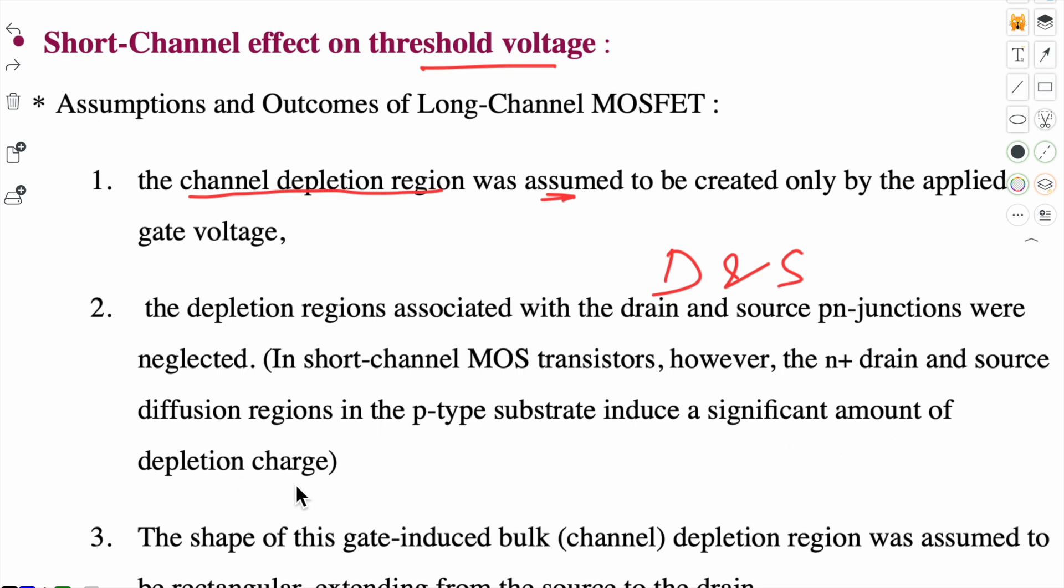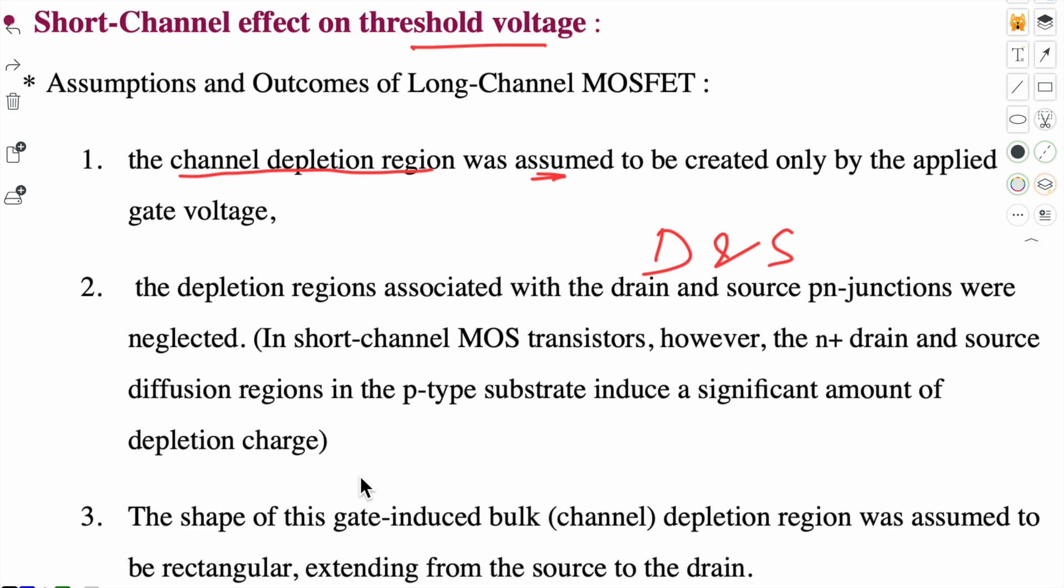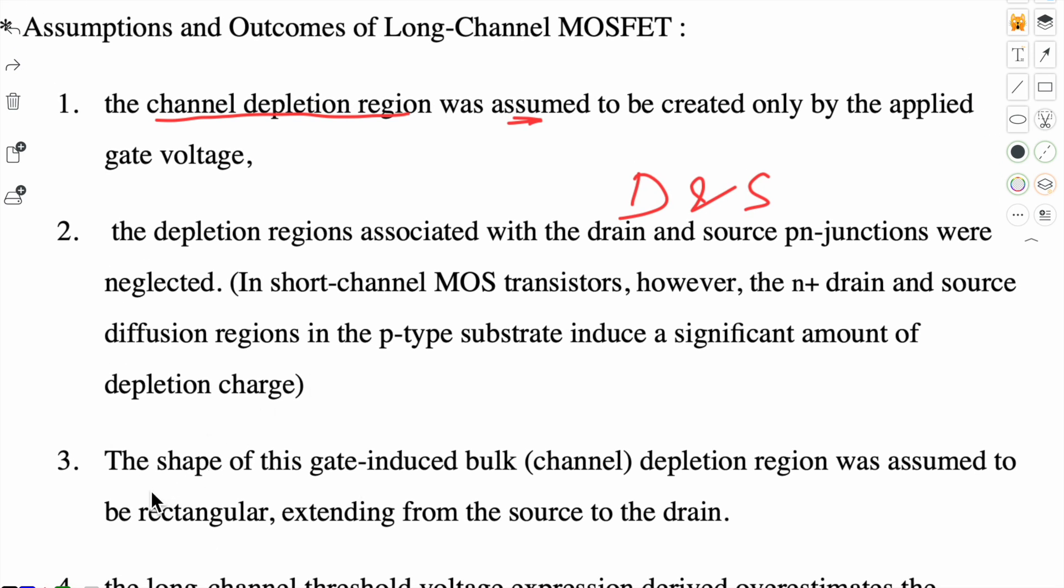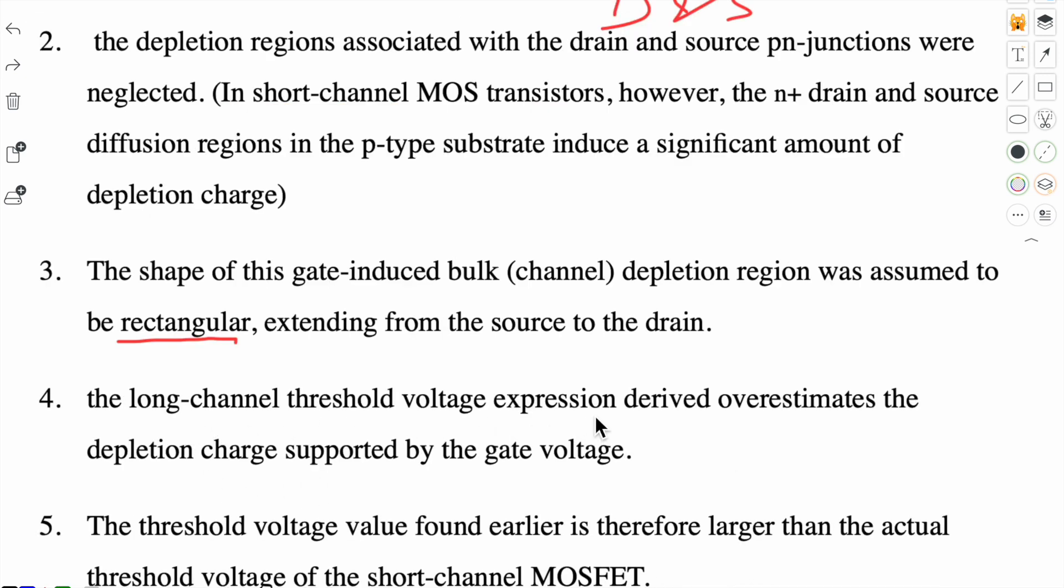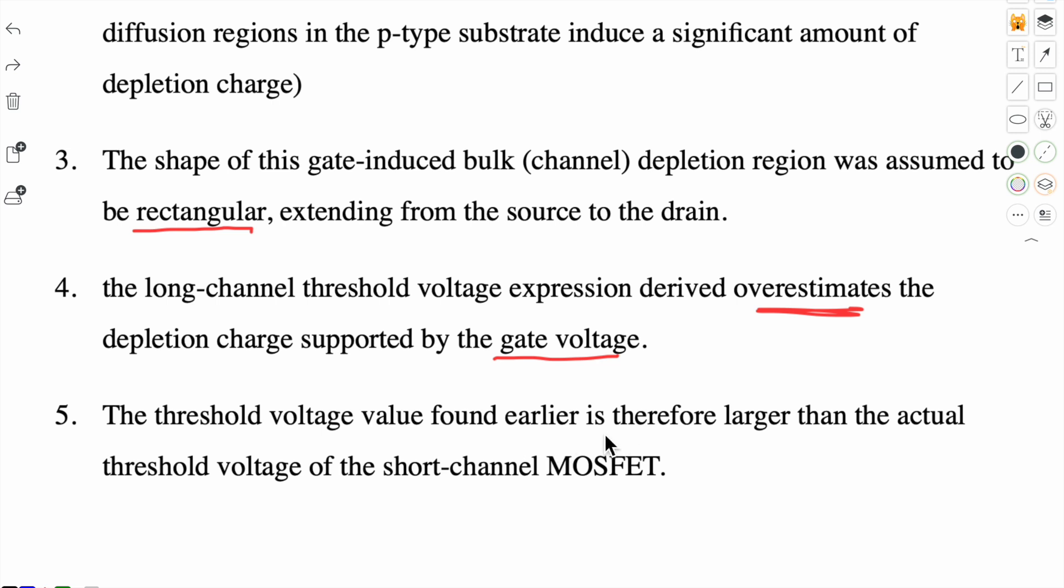Although in short channel MOS transistors, the N+ drain and source diffusion regions in P-type substrate induce a significant amount of depletion charge, so this also has a role which we will definitely consider. Third, the shape of this gate-induced bulk depletion region was assumed to be rectangular extending from source to drain. Fourth, the long channel threshold voltage expression overestimates the depletion charge supported by the gate voltage. And fifth, the threshold voltage value found earlier is therefore larger than the actual threshold voltage of the short channel MOS transistor.